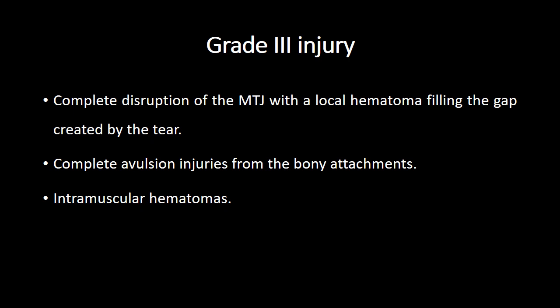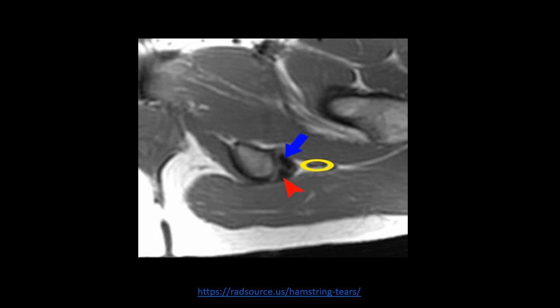Grade 3 injuries represent complete disruption of the myotendinous junction with local hematoma formation, or there can be complete avulsion of muscles from their bony attachment sites. Let us see an example of a grade 3 injury at the ischial tuberosity. For that, let us first revise the normal anatomy in this region.